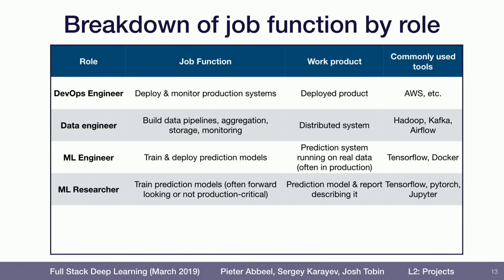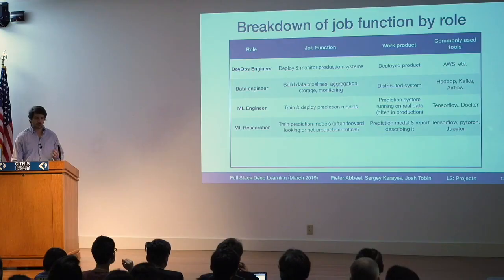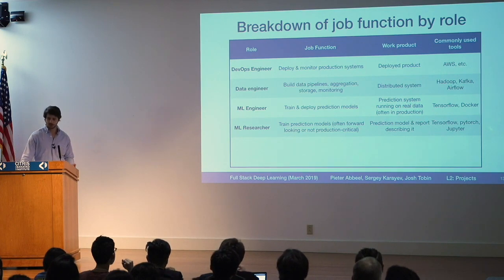Machine learning researchers — the distinction between machine learning researcher and machine learning engineer is fuzzy in a lot of organizations. But typically machine learning researchers are only responsible for the training prediction models piece, and then they hand off the model they train to someone like a machine learning engineer to deploy into production. There's a lot more exploration of data, iteration, and research, as opposed to getting things in the hands of customers.